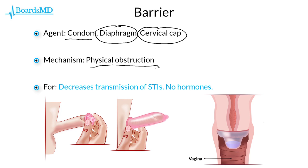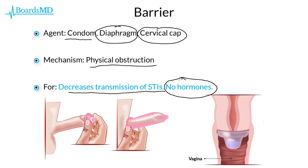There are some key advantages to utilizing barrier contraception, including that this method decreases transmission of sexually transmitted illnesses. Very high yield: this decrease in STI transmission is unique to barrier contraceptives in comparison to other contraceptive agents. Another significant advantage is that barrier contraceptives do not utilize hormones. As we can see, the male condom confines semen so it cannot escape into the female patient.